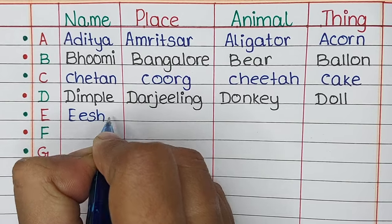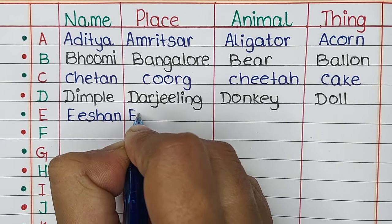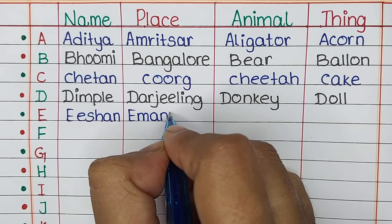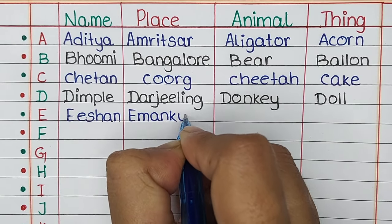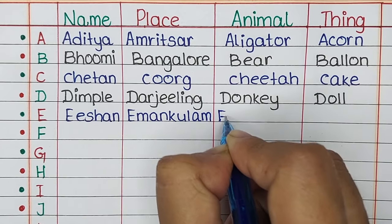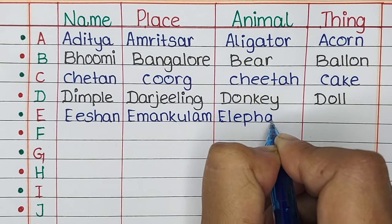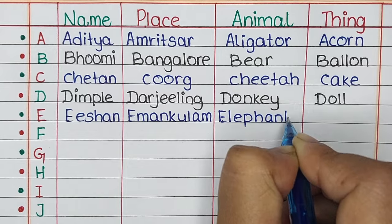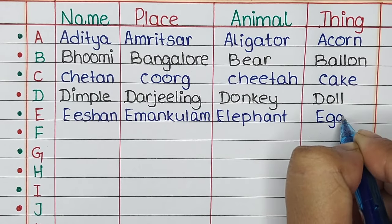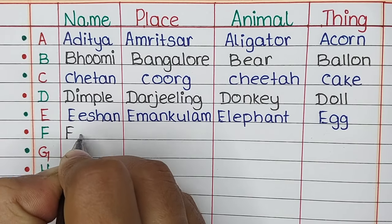The name is Ishan, the place is Ernakulam, the animal is Elephant, and the thing is Egg. Next is letter F.